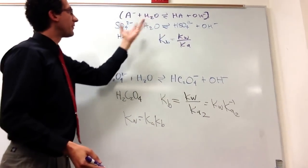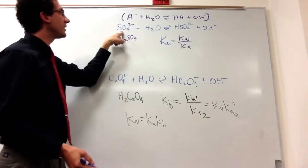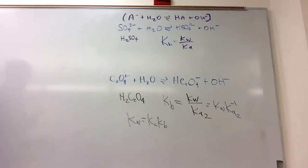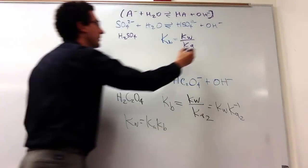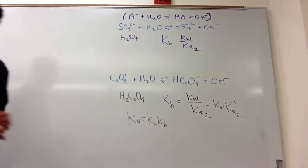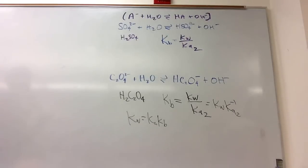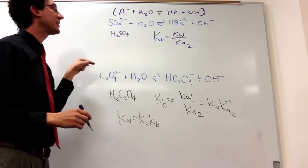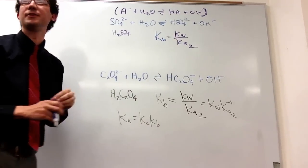So, in the reverse way, this going to this is which KA? The second loss of the proton. So, it's losing its second proton going this direction, so going this direction as a base, it's KW over KA2. Yeah?